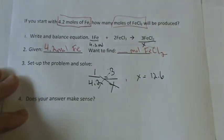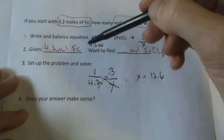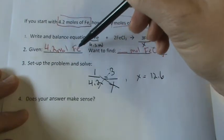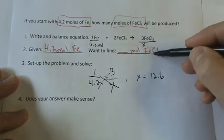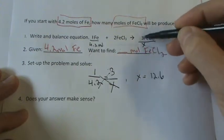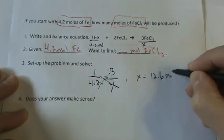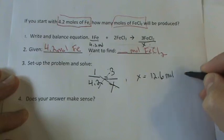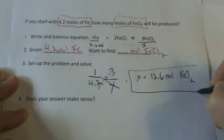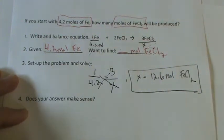At this point, I want to make sure I've got the right units. I was given moles of Fe, and I was trying to find moles of FeCl2, and the x is under FeCl2, so I think moles of FeCl2 makes sense for my units.